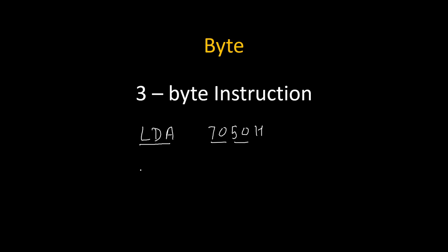If a 2-digit number is in the instruction, it will be a 2-byte instruction — for example, ADI 37H has a 2-digit number, so it is a 2-byte instruction. And if no digit is there in the instruction — for example, NOP — then it will be a 1-byte instruction. These are shortcuts to remember: 4-digit number → 3-byte; 2-digit number → 2-byte; no digit → 1-byte.